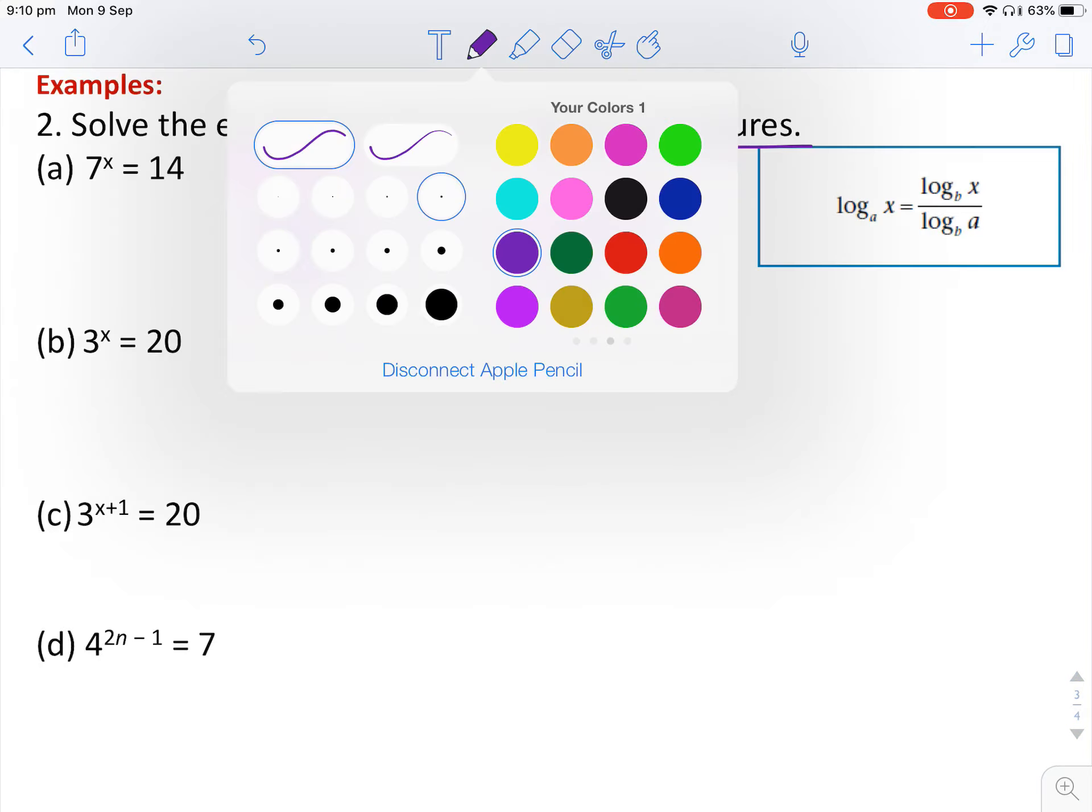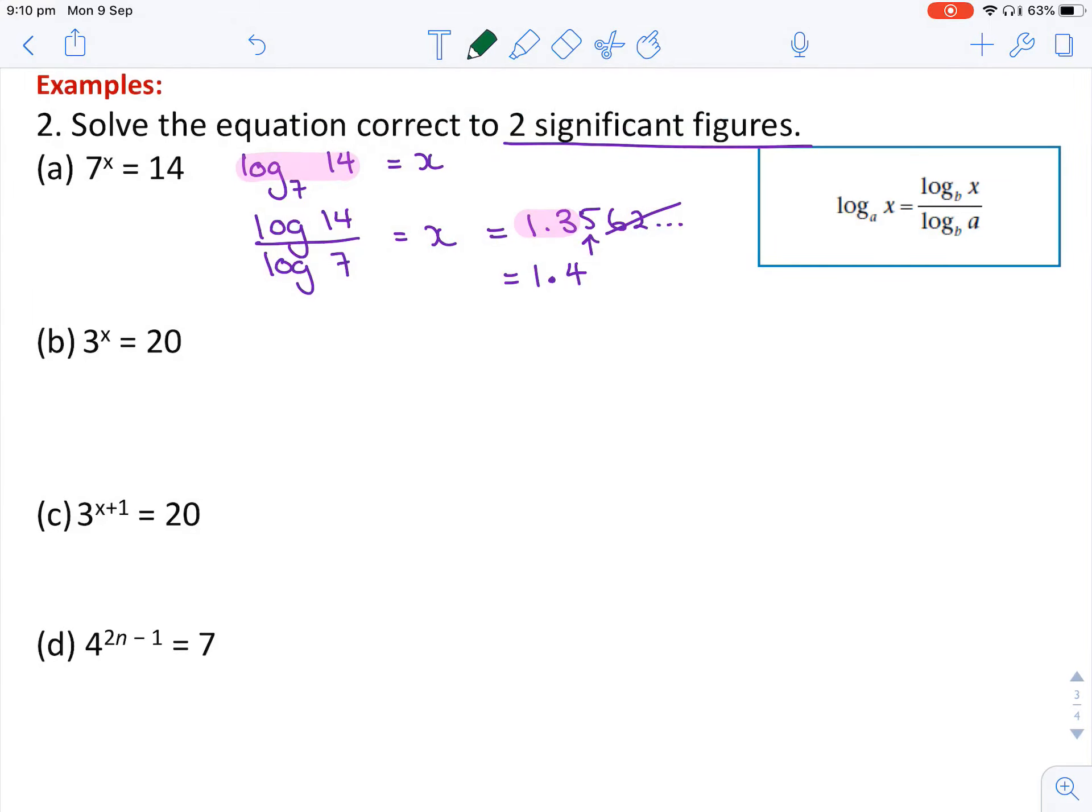I'll do the second method just on the side in a different color. So again, looking at part a, whenever you have something like this, log is what allows us to calculate for x. So given that our equation is 7 to the power of x equals 14, we could log both sides. By logging both sides, what that does is it brings the power down. So when I log both sides, that gives me x log 7 equals log 14.